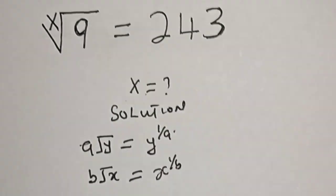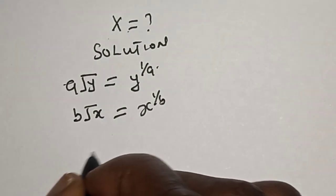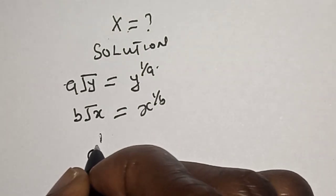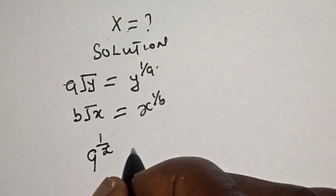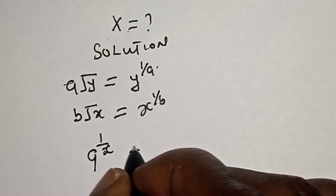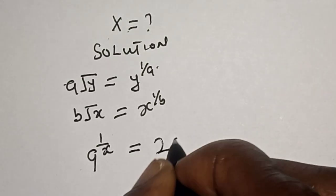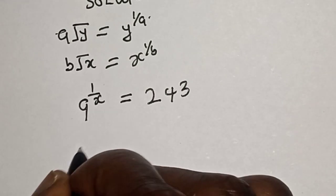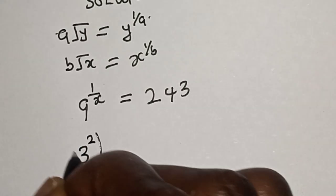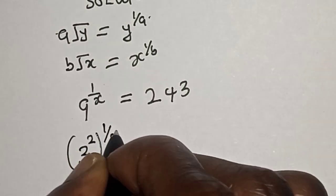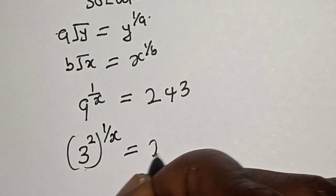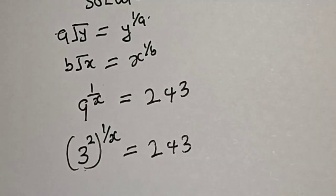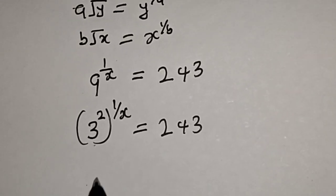Now, x-root of 9 can be written as 9 raised to power 1 over x equals 243. This can be written as 3 squared raised to power 1 over x equals 243. Take note: